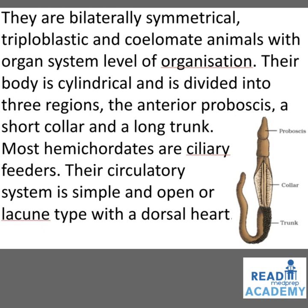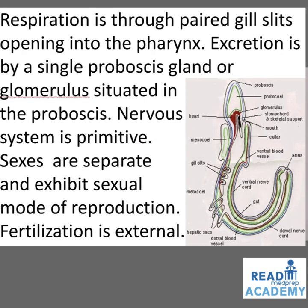Their circulatory system is simple, open or lacunar type with a dorsal heart. You can see the image showing a proboscis, collar, and trunk of hemichordates. Their body is cylindrical and divided into three regions: the anterior proboscis, a short collar, and a long trunk. Respiration is through paired gill slits opening into the pharynx. Excretion is by a single proboscis gland or glomerulus situated in the proboscis. The nervous system is primitive. You can see in the image: proboscis, protocoel, glomerulus, stomochord, skeletal support, mouth, collar, ventral blood vessel, ventral nerve cord, gut, anus, dorsal nerve cord, dorsal blood vessel, hepatic sacs, metasomal gill slits, and the heart.